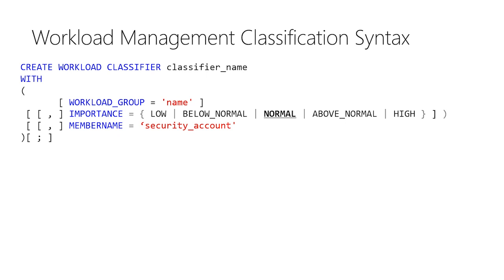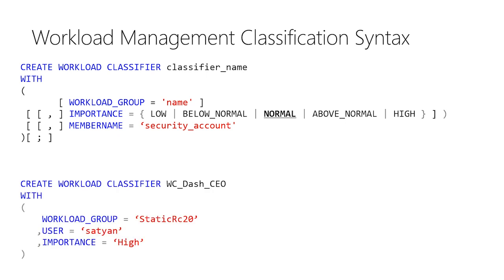Here's where the new capabilities come into play. You can now establish importance on top of your classification. We have five options: low, below normal, normal (which is the default), above normal, and high. We also have the ability to map things to a security account via the member name parameter. A classic example is assigning your CEO — the Satya username assigned into the high importance classifier — so any requests from the CEO will have the static RC20 resource grant and high importance stamped on them.